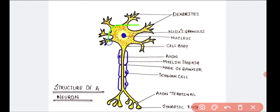The cell body contains the cytoplasm with a typical granular structure. The red color dots you can see are granular bodies present in the cytoplasm of the cell body, and these granular bodies are called Nissl granules. In the center there is a nucleus.